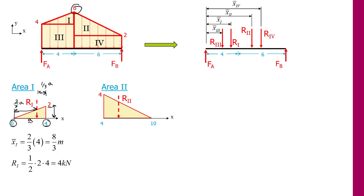Now if we move on to area 2, it is also a triangle, but now the height of our triangle is 4, and it starts at x equals 4 and goes to x equals 10. So when we define x1, we have to take the base here, which is 10 minus 4, which is 6, and we are 1/3 of 6 from that edge, but that edge starts at 4. So we get that x-bar 2 is 4 plus 1/3 times 6, which is 6 meters. Now for the resultant, we get 1/2 the base times the height, so 1/2 times 6 times 4, which will give us 12 kilonewtons.